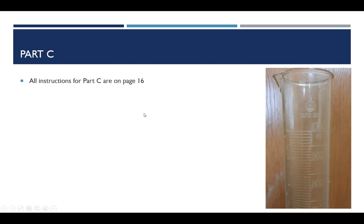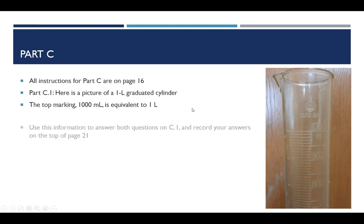So part C, all the instructions you're going to need for that are on page 16. For part C1, you'll need this picture of the 1 liter graduated cylinder. And up to this line right here, this line is 1 liter, the very top line. But you'll notice there's an equivalent amount in milliliters. So 1,000 milliliters equivalent to 1 liter. You'll want to use that information to answer both of the questions that you're asked on C1. And then write your answers on the report sheet on the top of page 21 where you're asked for it.